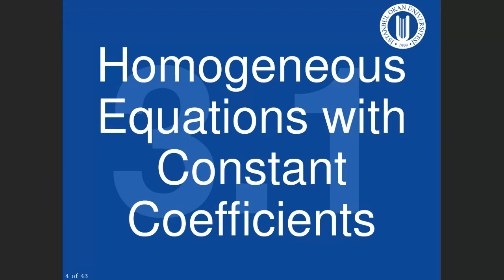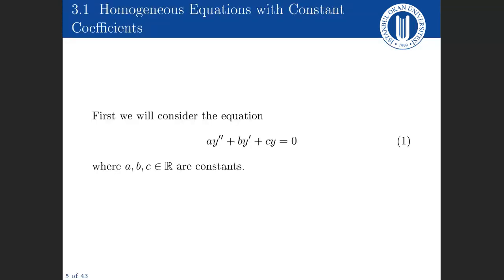To start with, we're going to talk about homogeneous equations with constant coefficients. We're going to be looking at the equation a y double prime plus b y prime plus c y equals zero, for numbers a, b, and c.